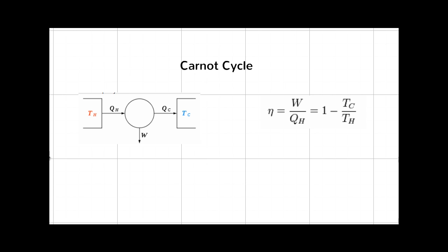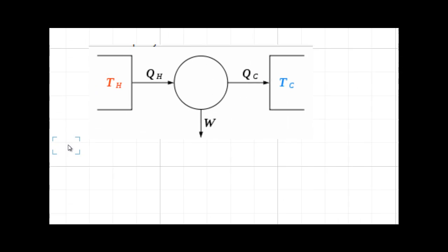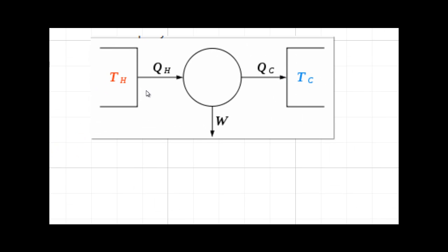The Carnot cycle can be represented by this kind of a diagram where heat is flowing from the hot thermal reservoir to a low temperature reservoir. And by flowing through a turbine or something like that, work can be done.